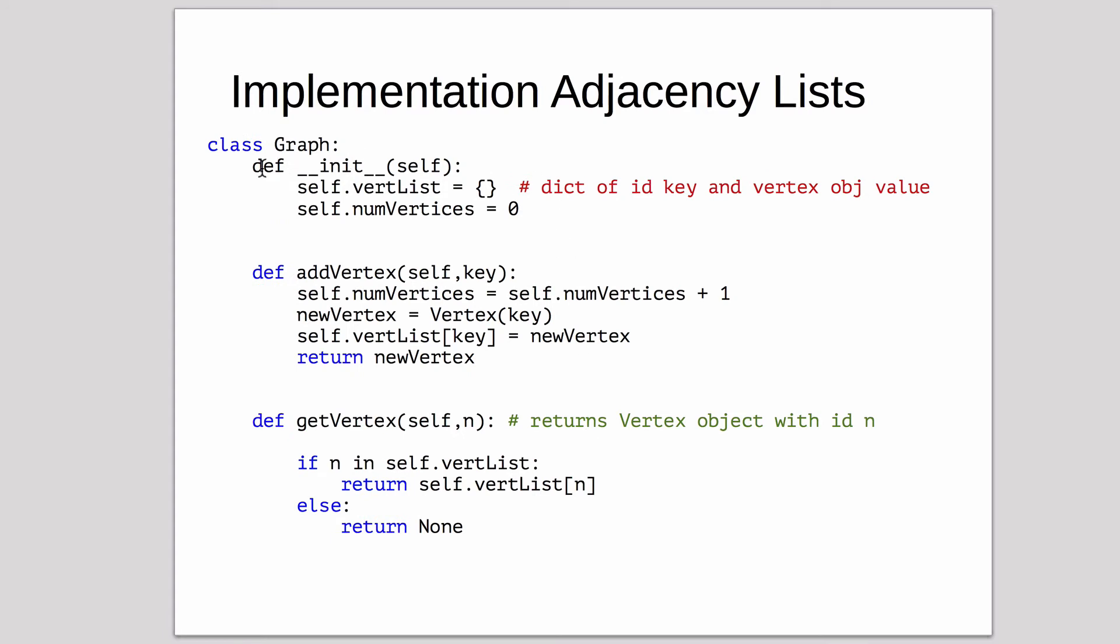Now here's our graph object. It has a few more methods. It keeps the vertex list, which is the list of all the vertices, and then it keeps how many vertices there are. This isn't really required. You could just get the size of the vertex list dictionary, and that's fairly efficient for dictionaries in Python.